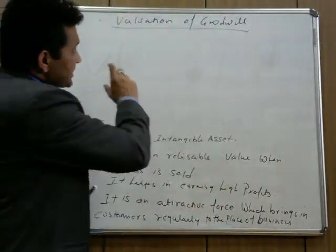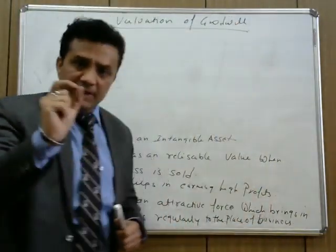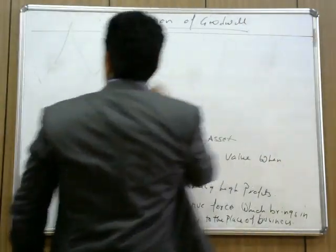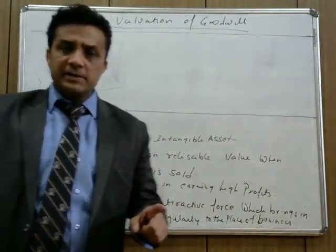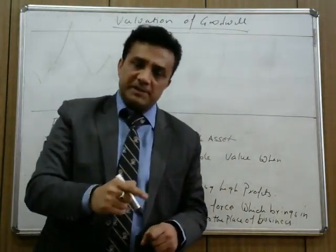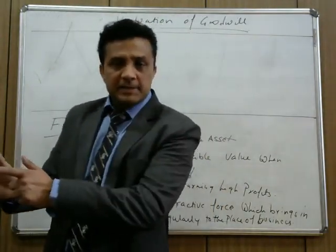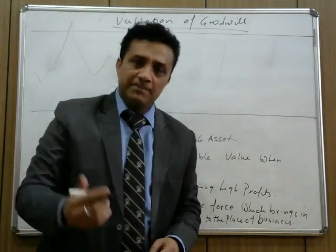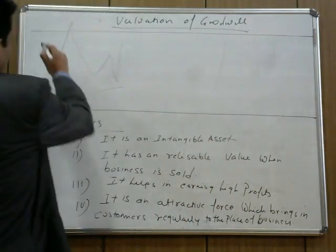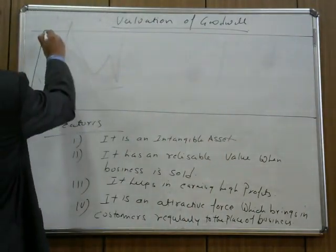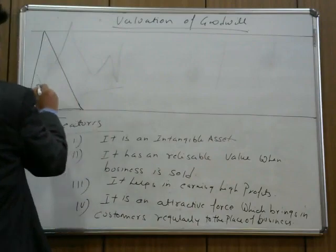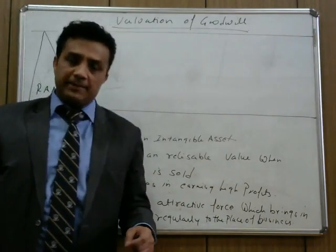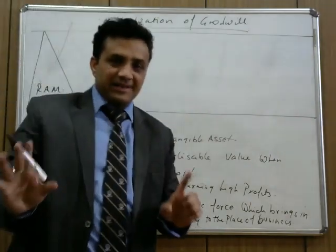Now let me describe goodwill with the help of a small example. Let's say there are five traders engaging in cloth retailing business in the same area — let's take the area of Chandni Chowk, Delhi. The first trader's name is Ram. Ram is a very old trader in Chandni Chowk, Delhi — I'm just taking an example.